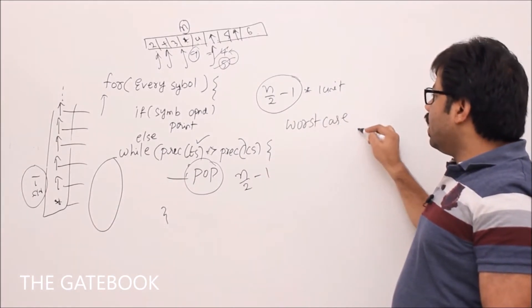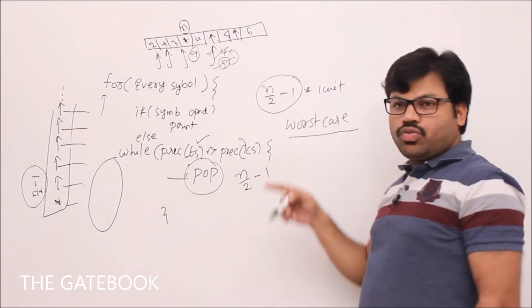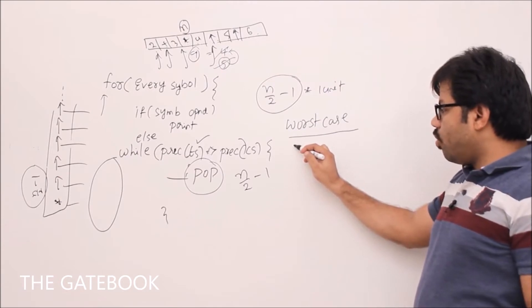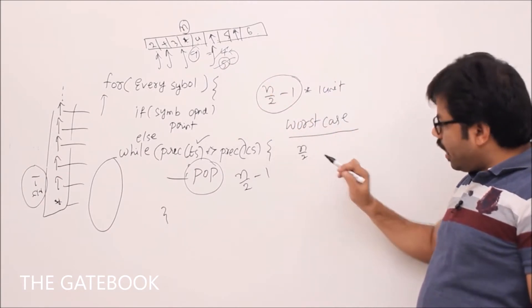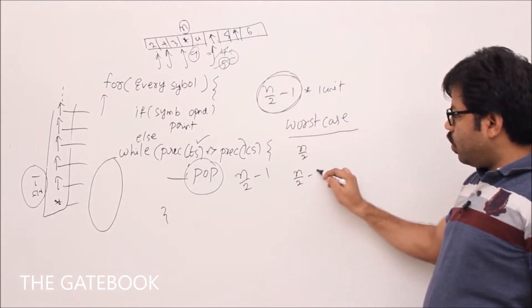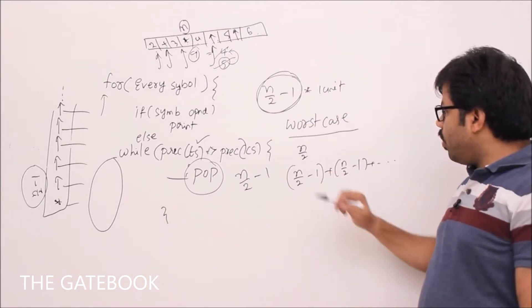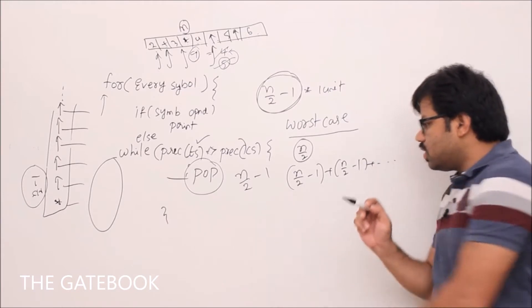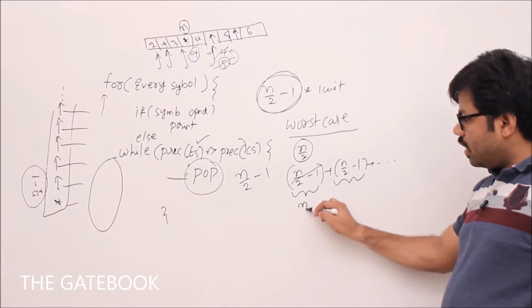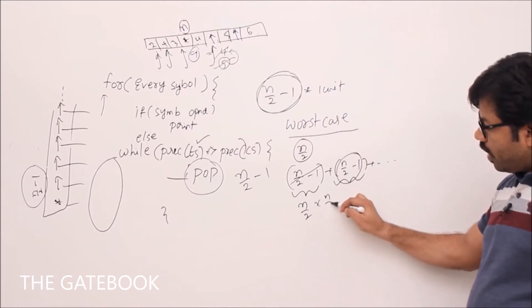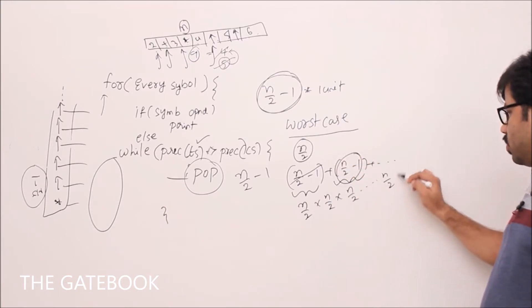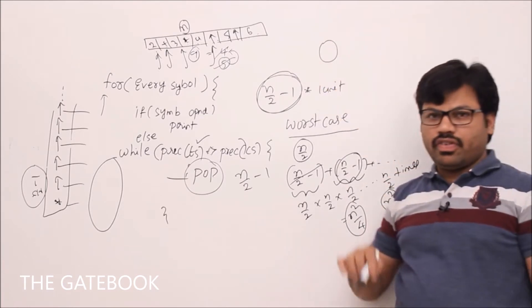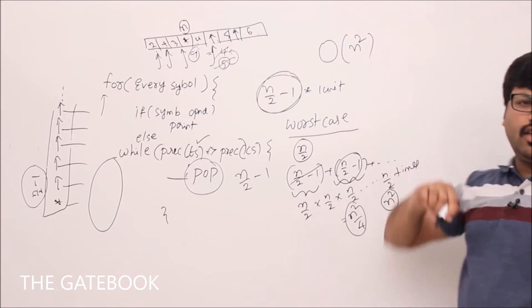In the worst case, if for every operator approximately n/2 minus 1 operations happen, and there are approximately n/2 operators, then: (n/2 − 1) + (n/2 − 1) + ... n/2 times. Approximating n/2 − 1 ≈ n/2, this becomes n/2 × n/2 = n²/4, and asymptotically that is O(n²). People say the time complexity of infix to postfix conversion is O(n²), but that is wrong.